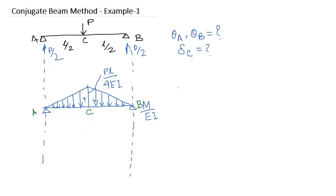So the shear force is nothing but the reaction at point A and B, and both are equal in this case. So R_A equals to R_B equals to this total force divided by two. The area of the triangle is half into base that is L into PL by 4EI by 2.